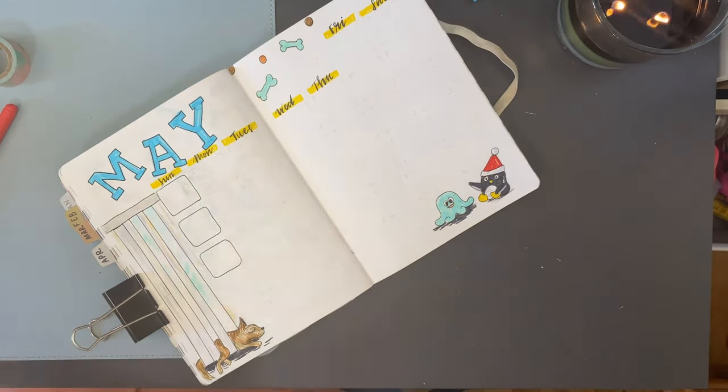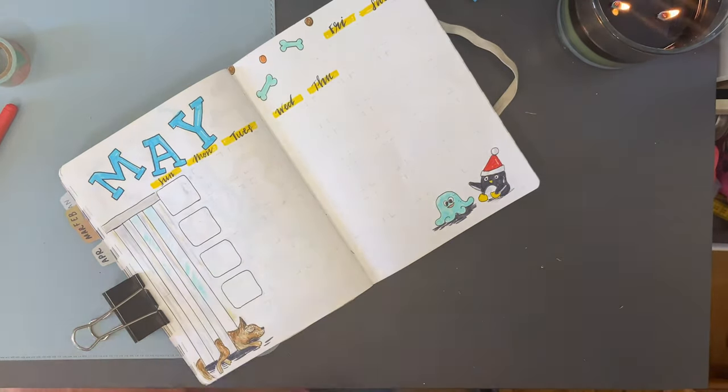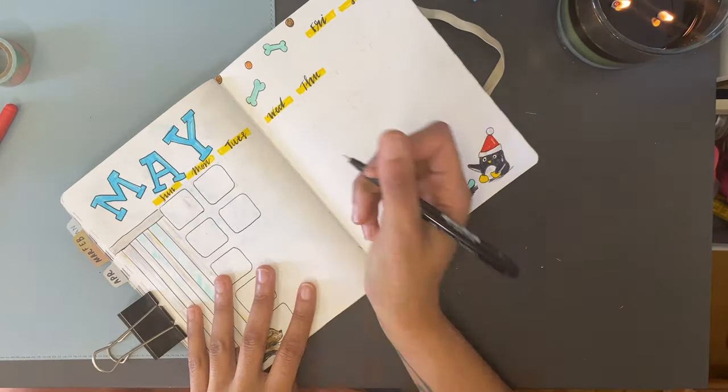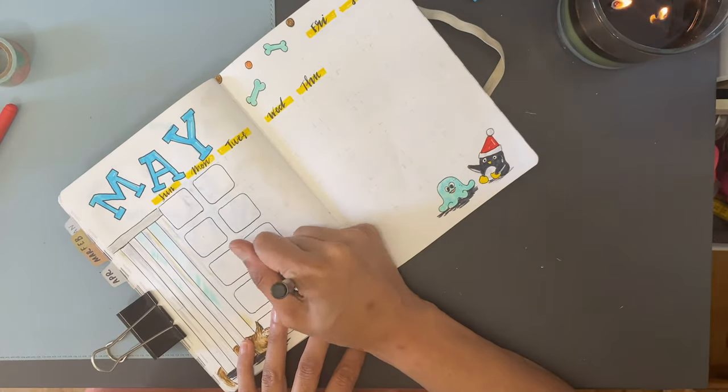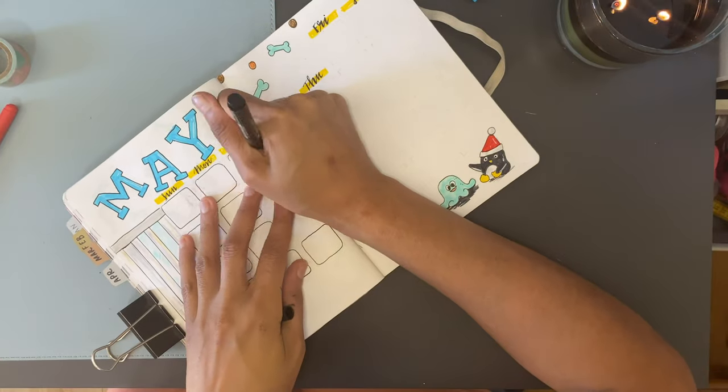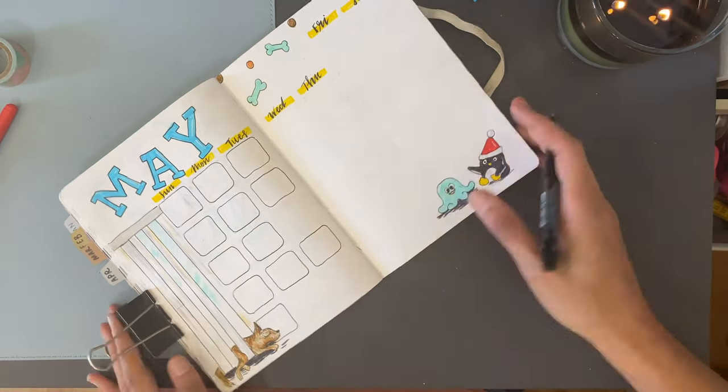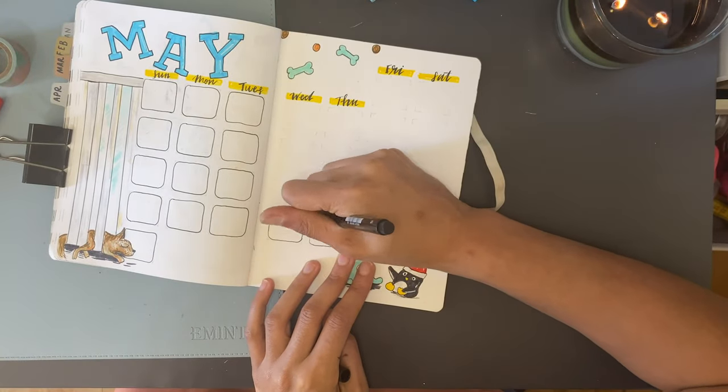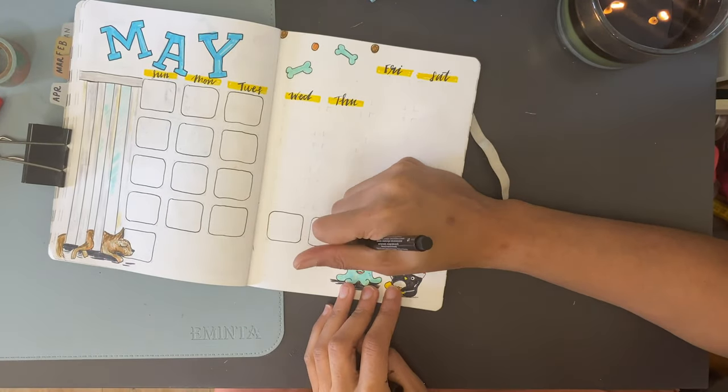I realized I hadn't done separate boxes for the calendar yet this year, so I wanted to separate out every calendar day in its own little box. I'm not too worried about being exact with these boxes. I'm going for a very rough, very fun look and making sure I'm rounding the corners.